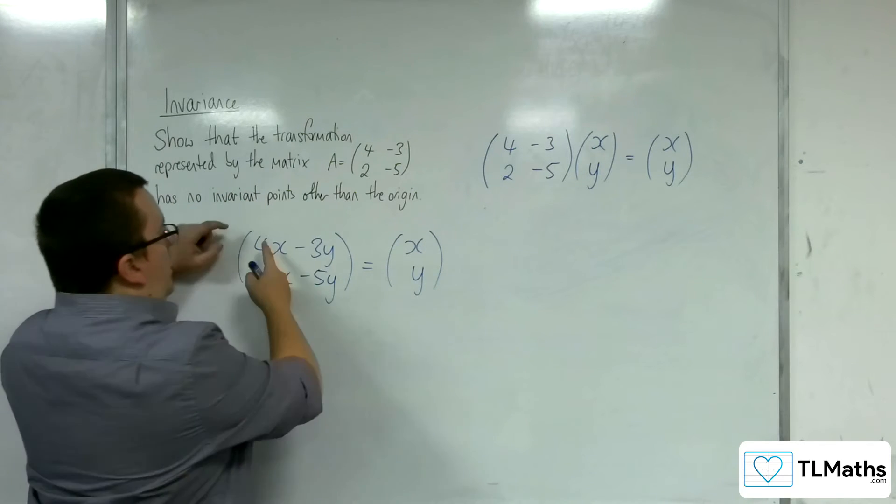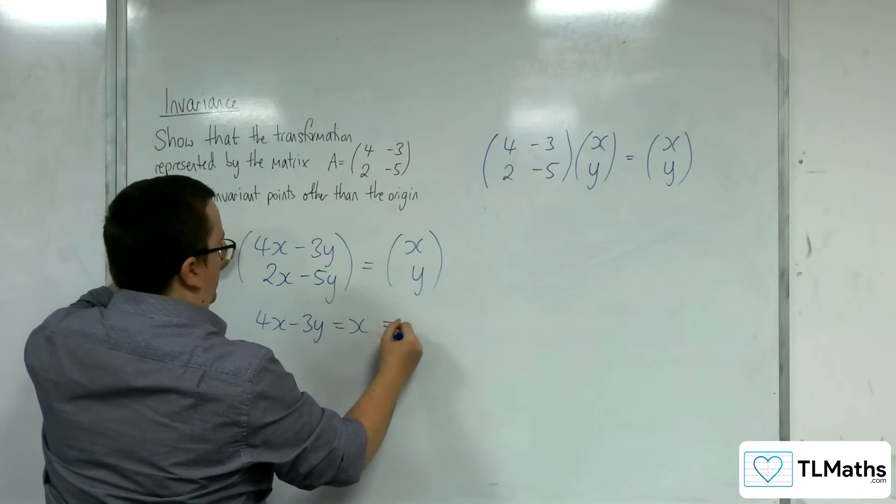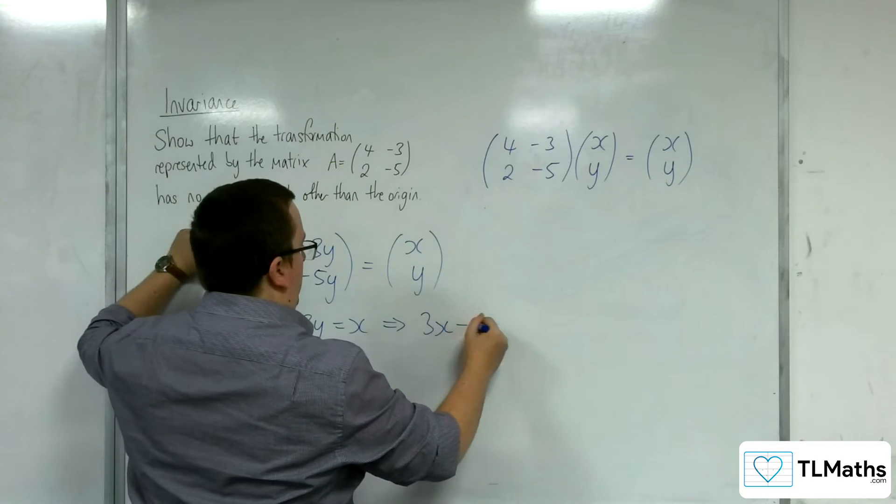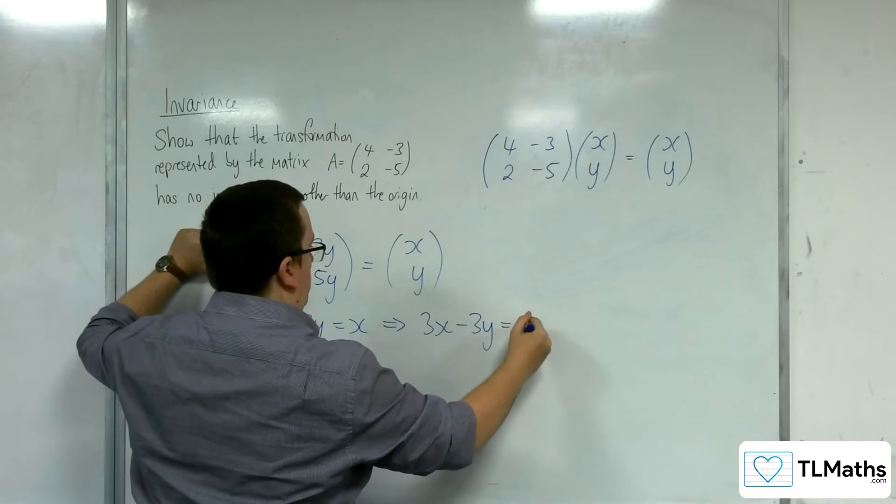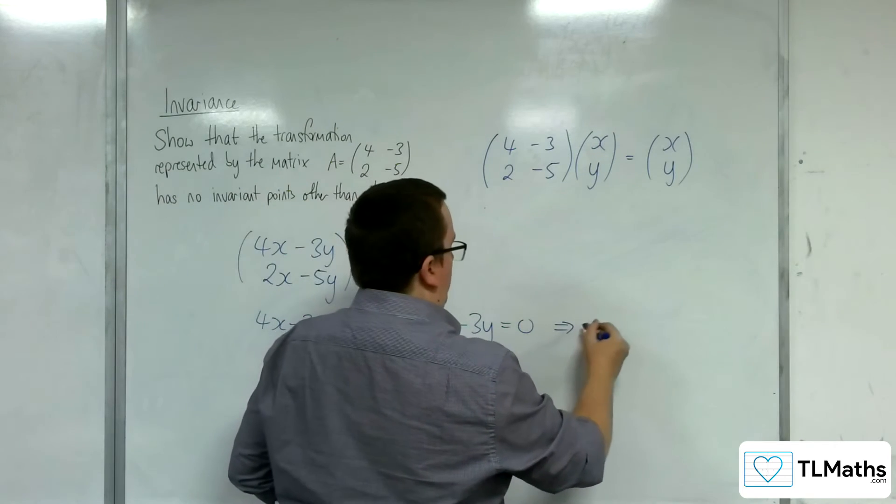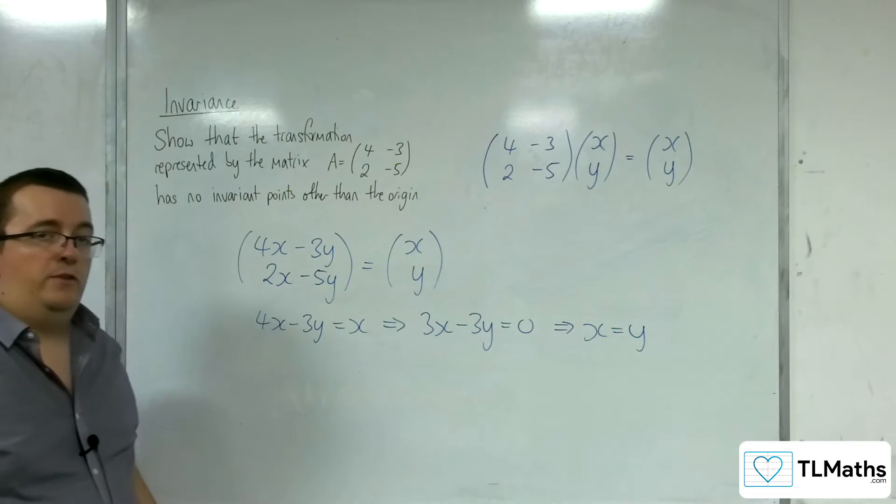So our top line would say that 4x take away 3y must be equal to x. In which case 3x take away 3y is 0, taking the x from both sides, which implies that x is equal to y.